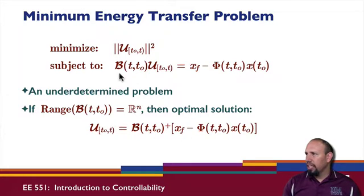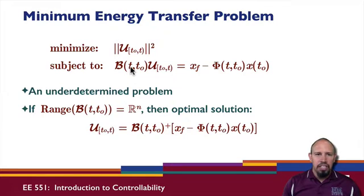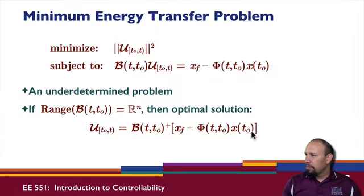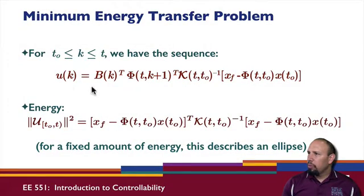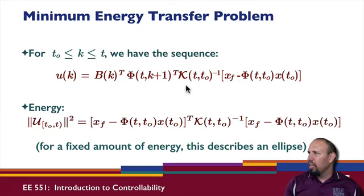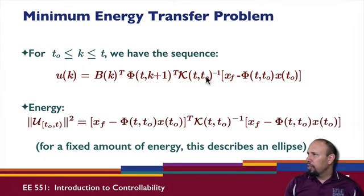We get an actual equality when the range condition is satisfied. If it's not all of R^n, then the constraint in our minimization problem is not satisfied. The solution is given by the control map pseudo-inverse times this quantity. This gives us the entire control sequence, with individual values valid from t0 to t. The quantity from t0 to t doesn't involve k; k appears separately in the formula.